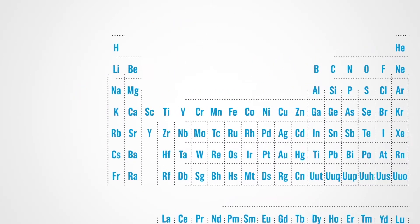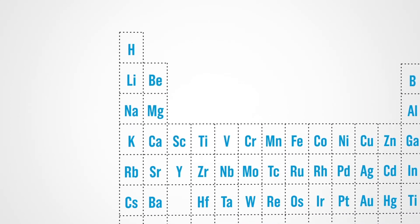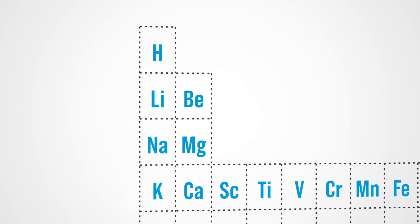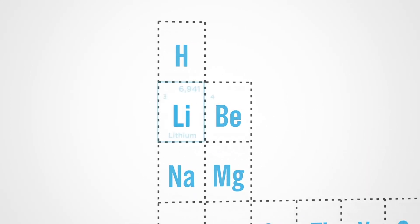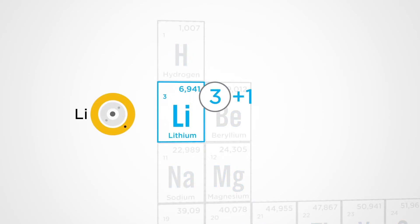We call it periodic because in this table the elements become similar again periodically. Let's see: if we start at 3 (lithium), the properties will vary regularly along the line until 10 (neon).